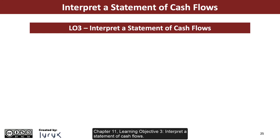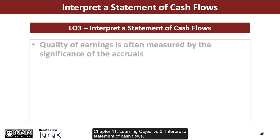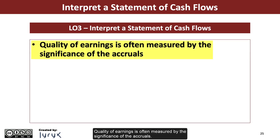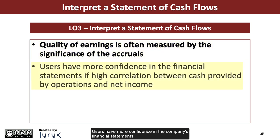Chapter 11, Learning Objective 3: Interpret a Statement of Cash Flows. Quality of earnings is often measured by the significance of the accruals. Users have more confidence in the company's financial statements if there is a high correlation between cash provided by operations and net income.